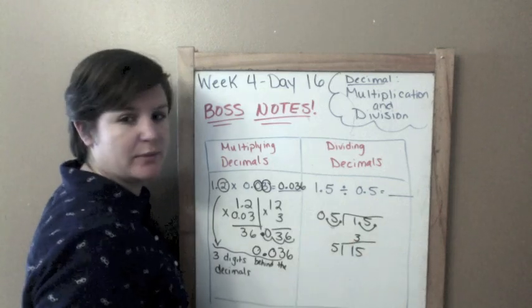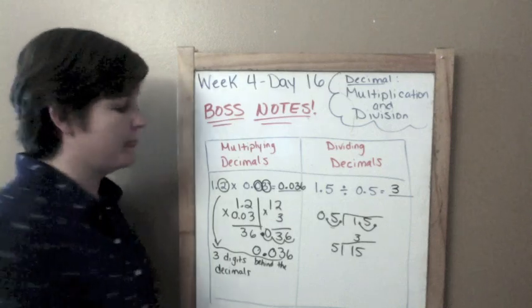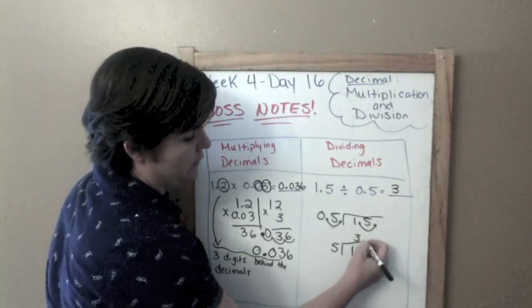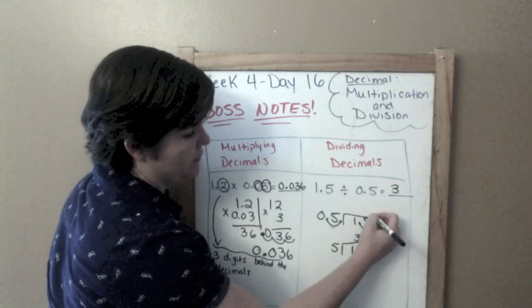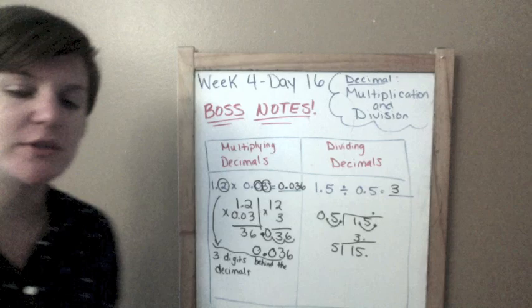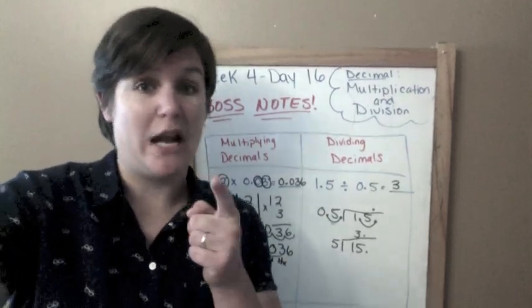And now this would be 15 on the inside. And how many times does 5 go into 15? 3 times. So 3 is your answer. Actually, this is where you would put wherever your decimal is, you'd also put it there. But because that would be 3 and 0 tenths, you can just leave it as 3. That was a lot for boss notes. Let's get to the practice.